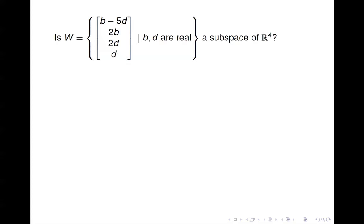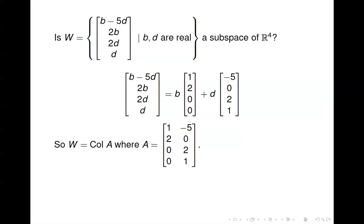Here's a set W — is it a subspace of ℝ⁴? We can write any generic element of W as a linear combination of two vectors by putting it in parametric vector form. We can then say W equals the column space of a matrix A formed by placing those two vectors as columns. The column space of A consists of all linear combinations of those columns, which is exactly W, so W is a subspace.